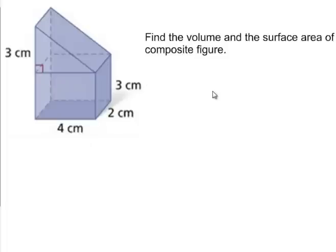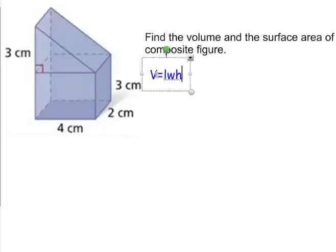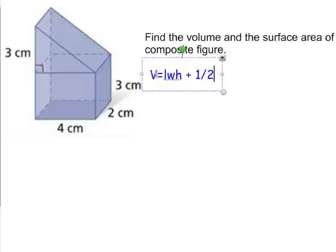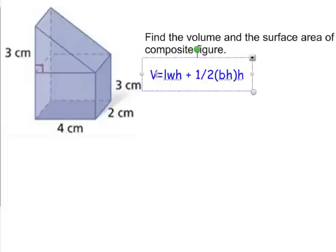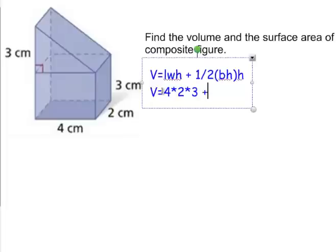Let's do one more example: find the volume and surface area of the composite figure. For volume, I have a rectangular prism — length times width times height — plus the volume of a triangular prism, which is the area of the base (one-half times base times height of the triangle) times the height of the prism. The rectangular prism is 4 times 2 times 3.